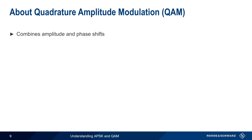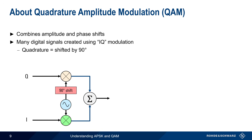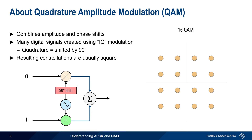Another form of modulation that combines amplitude and phase shifts is Quadrature Amplitude Modulation, or QAM. Many digitally modulated signals, especially higher order signals, are created using something called IQ modulation. In IQ modulation, an in-phase or I component is combined with a quadrature or Q component to produce a modulated signal. Quadrature simply means shifted by 90 degrees. The result of this IQ modulation is a constellation diagram where the points are arranged in a square shape, each point having a unique combination of amplitude and phase. In this example, our 16 QAM signal carries 4 bits per symbol.